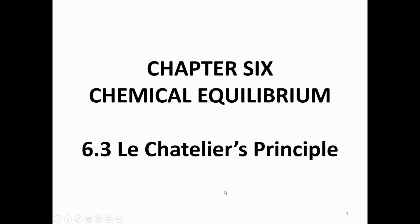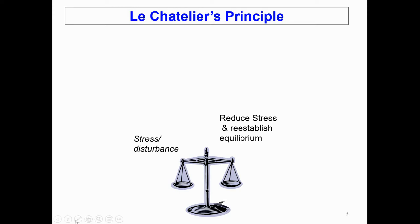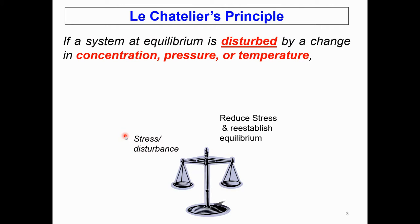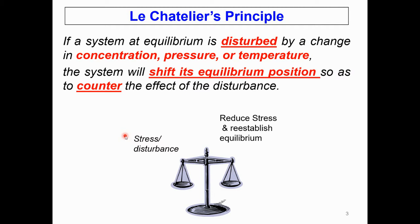Welcome to Chapter 6 Chemical Equilibrium: Le Châtelier's Principle. State Le Châtelier's Principle: if a system at equilibrium is disturbed by a change in concentration, pressure, or temperature, the system will shift its equilibrium position so as to counter-effect the disturbance.